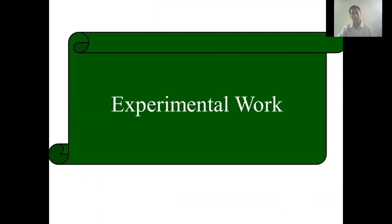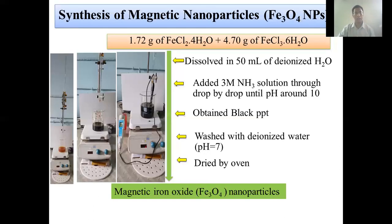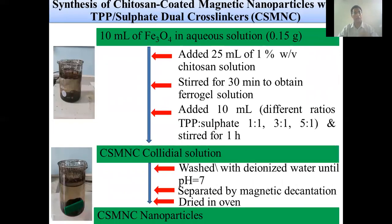Let me introduce the methodology. Firstly, the synthesis of magnetic nanoparticles. And then, the synthesis of chitosan-coated magnetic nanoparticles with TPP surface using a cross-linking agent.